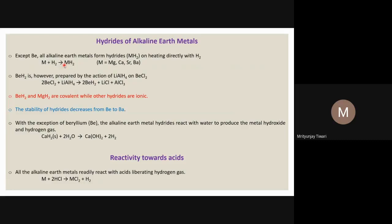In solution, ion pairs might be formed where cations and anions are surrounded by many water molecules. When concentration is quite high, cations and anions can come so close that they appear to interact and form a bond — these are called ion pairs. That is why concentration is sometimes not equal to activity — which is where the activity term comes from, as we have seen in ionic equilibrium.